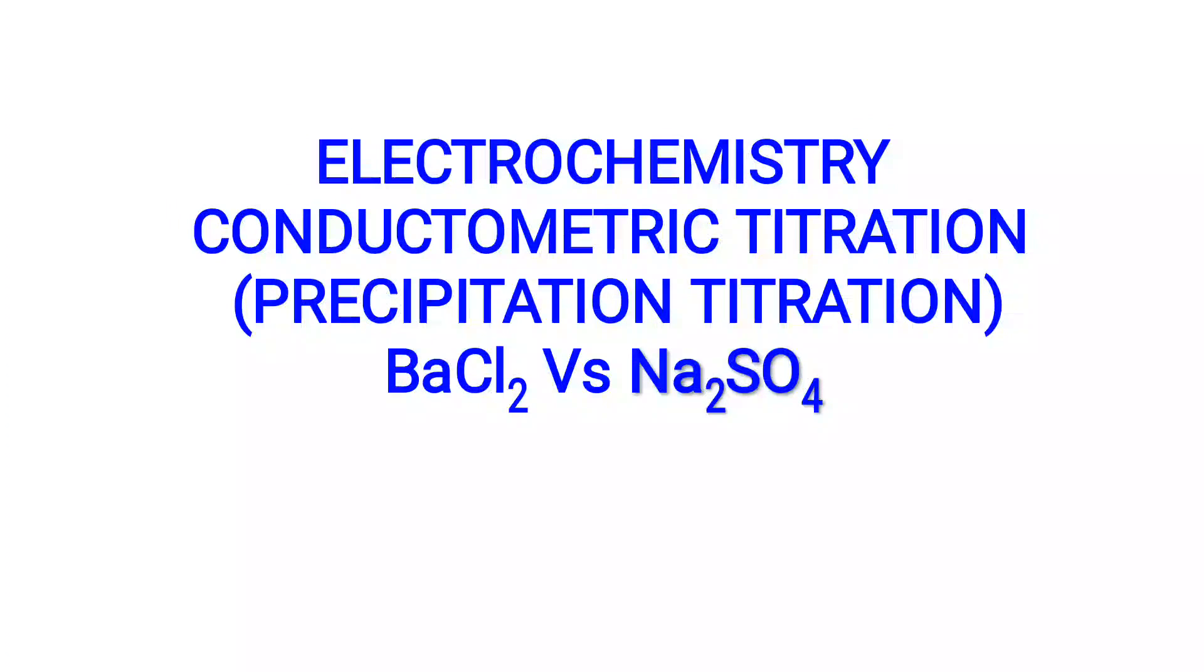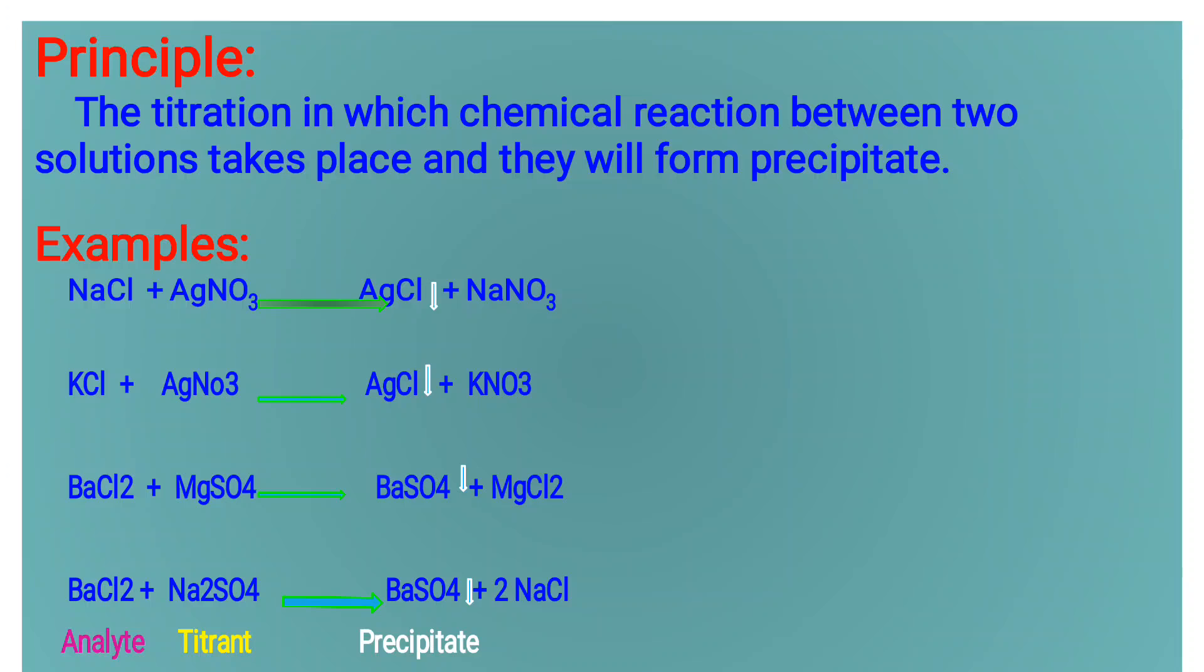Today, we are going to discuss the topic of electrochemistry in conductometric titration in case of precipitation titration for the example of barium chloride and sodium sulfate. Principle of precipitation titration: The reaction in which chemical reaction between two solutions takes place and they will form a precipitate.